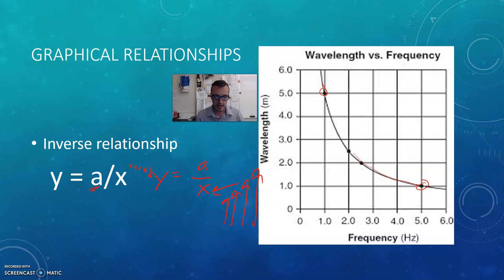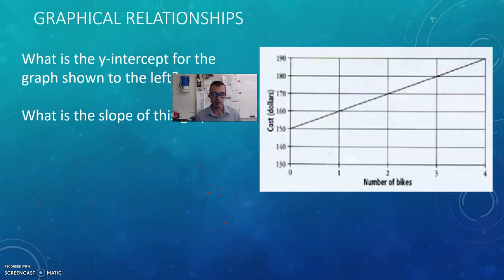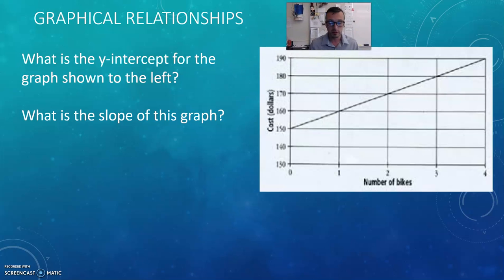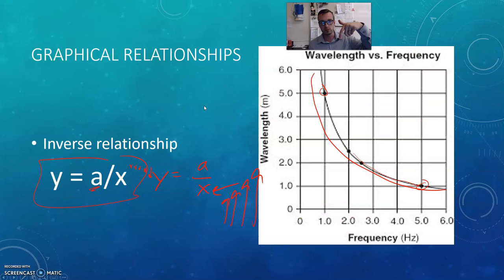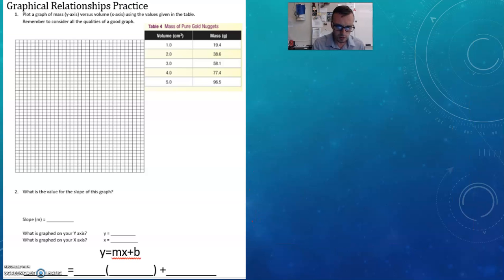This guy would get smaller and smaller and smaller as I make x bigger and bigger. You see that here: as x is only equal to one, y is five, but as you increase x, x goes up to five and then that y goes down to one. As one goes up the other goes down, and it's going to always look like this kind of curve here. So the three main relationships we're going to see this year as we look at physical relationships are the linear relationship, the quadratic relationship, and the inverse relationship.